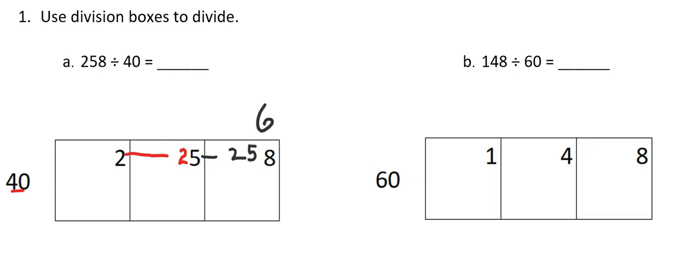So I can take 6 groups of 40 out of 258. 6 times 40 is 240. I'll do my subtraction and I get a remainder of 18. That seems like a larger remainder, but since we're asking how many groups of 40 we can get out of our number, that remainder is fine because I couldn't make another group of 40 out of that leftover 18. So 258 divided by 40 equals 6 remainder 18.